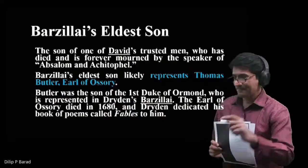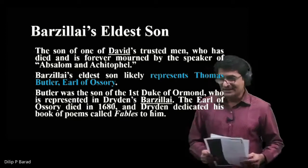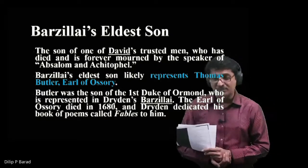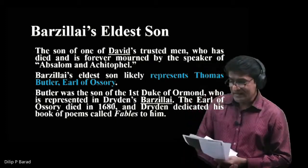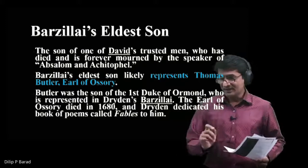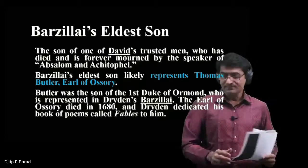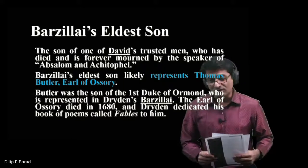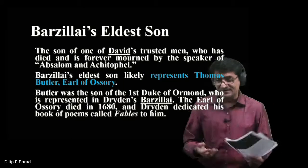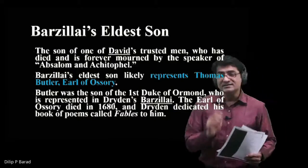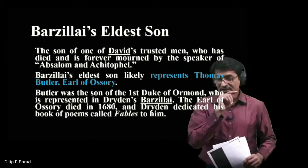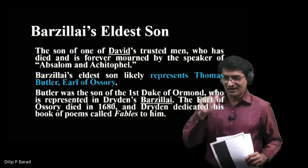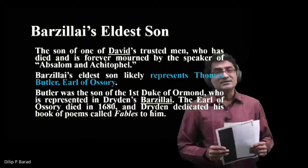Barzillai's eldest son is another character — the son of one of David's trusted men who has died and is forever mourned by the speaker of Absalom and Achitophel. Barzillai's eldest son likely represents Thomas Butler, the Earl of Ossory, son of the first Duke of Ormond. The Earl of Ossory died in 1680, and Dryden dedicated his book of poems called Fables to Barzillai and his eldest son Thomas Butler.